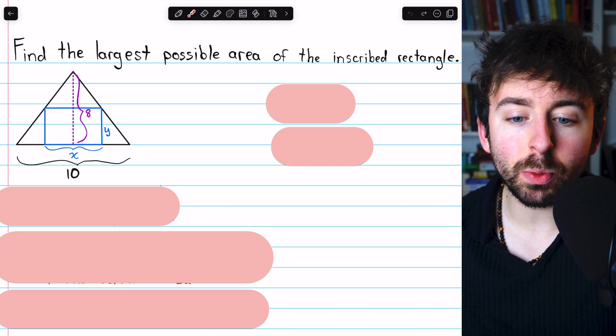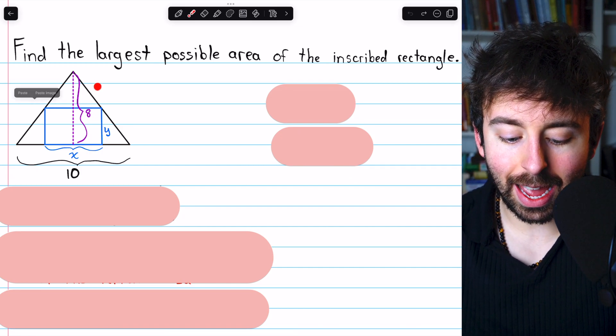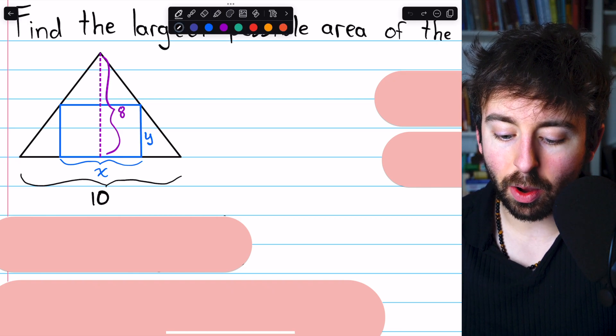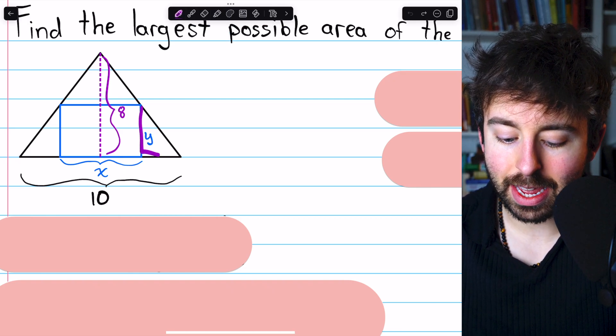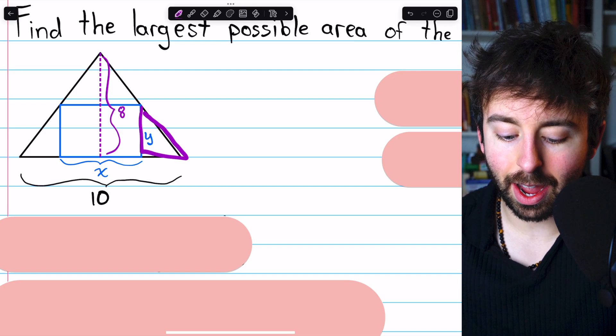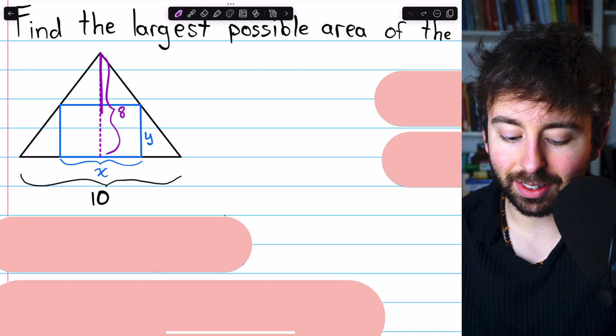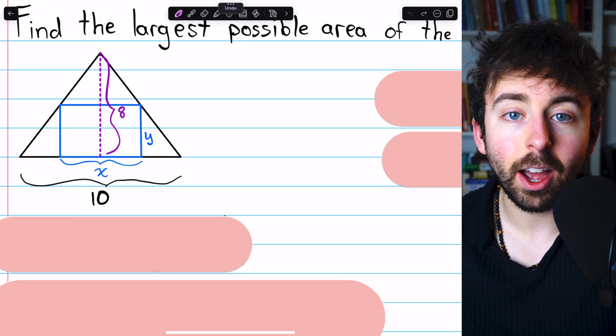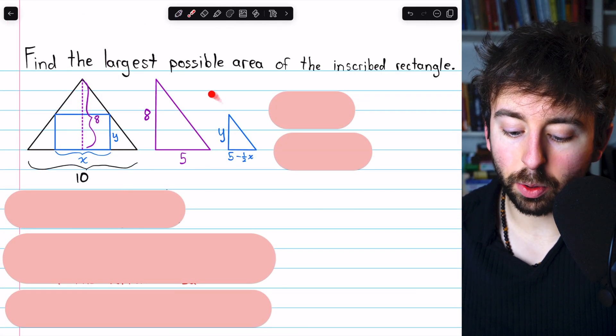Like I hinted at, we'll begin with similar triangles. Looking at our picture here, there are a few similar triangles. The one that we're going to focus on is this triangle in the corner with a height of y, and this sort of half of the isosceles triangle with a height of 8. Here's what those look like.